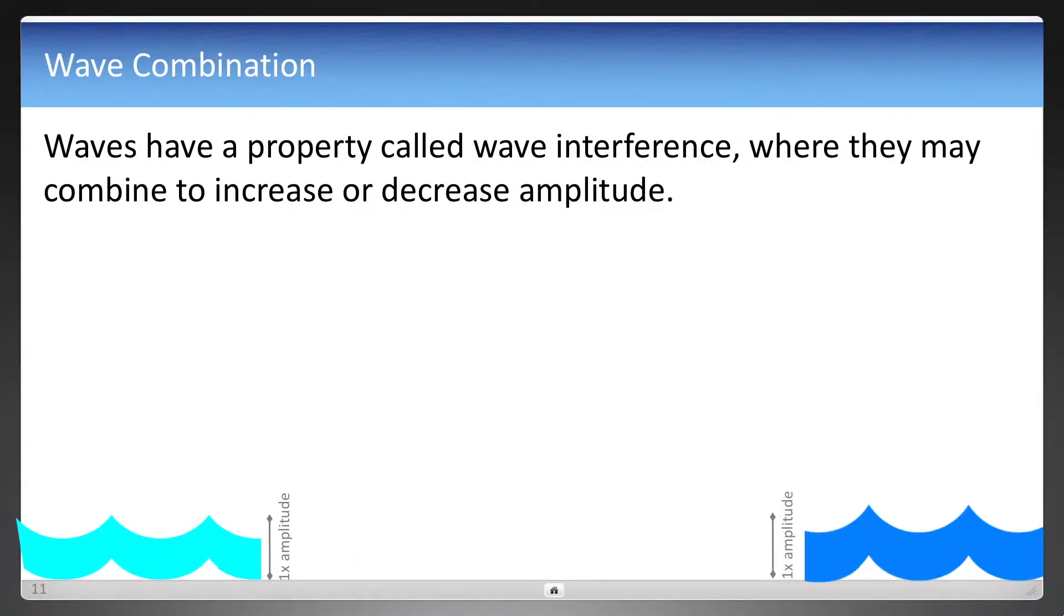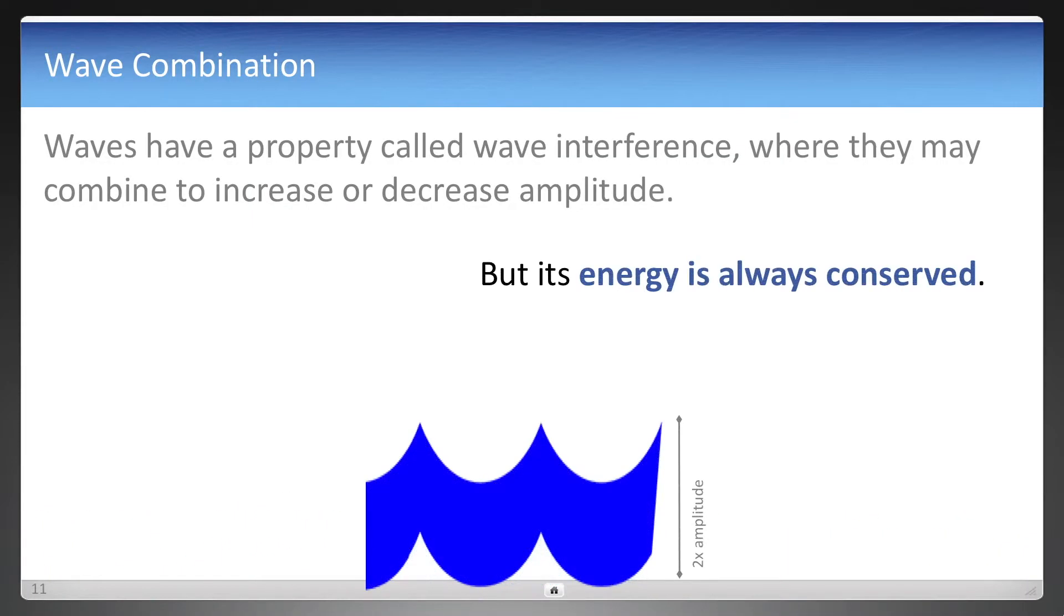Now waves have a property called wave interference. This is where waves combine to increase or decrease their amplitude. So let's just say two waves in the same phase have equal amplitude. Let's call it 1x amplitude. Same phase combined and becomes 2x amplitude, but its energy is always conserved.